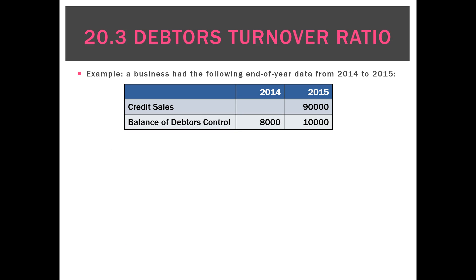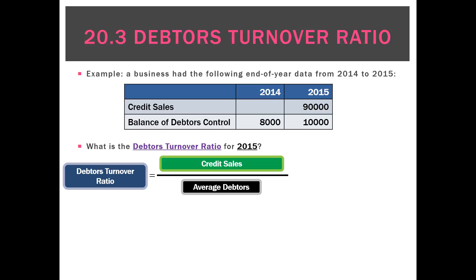Using an example: in 2015 we had credit sales of $90,000. The balance of debtors control at the end of 2014 was $8,000, and at the end of 2015 it was $10,000. Looking at the debtors turnover ratio, it is credit sales of $90,000 divided by average debtors of $9,000 — because (8,000 + 10,000) divided by 2 equals 9,000 — giving us 10.0 times.